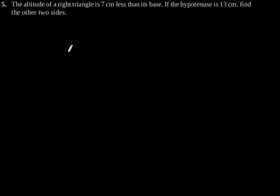Exercise 4.2, Question number 5. The altitude of a right triangle is 7 cm less than its base. If the hypotenuse is 13 cm, find the other two sides.